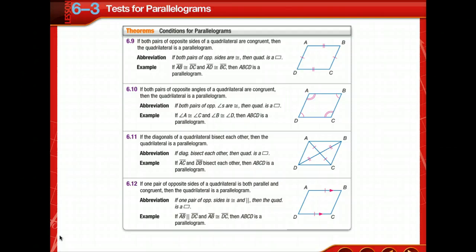If a quadrilateral has each pair of opposite sides parallel, it is a parallelogram by definition. This is not the only test, however, that can be used to determine if a quadrilateral is a parallelogram. Here are some more conditions for parallelograms. If both pairs of opposite sides are congruent, if both pairs of opposite angles are congruent, if the diagonals bisect each other, and if one pair of opposite sides is both parallel and congruent.